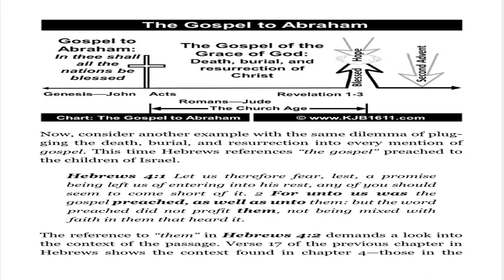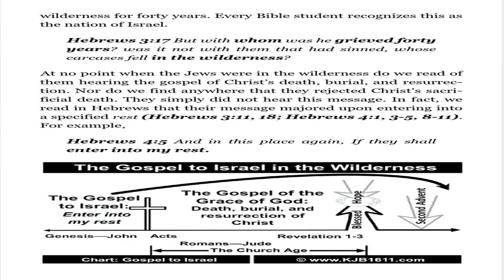Now consider another example with the same dilemma of plugging the death, burial, and resurrection into every mention of gospel. This time Hebrews references the gospel preached to the children of Israel. Hebrews 4:1-2: 'Let us therefore fear, lest a promise being left us of entering into his rest, any of you should seem to come short of it. For unto us was the gospel preached, as well as unto them, but the word preached did not profit them, not being mixed with faith in them that heard it.' The reference to 'them' in Hebrews 4:2 demands a look into the context of the passage. Verse 17 of the previous chapter shows the context: those in the wilderness for 40 years — the nation of Israel.